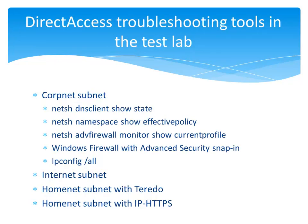The next part of this document has you view the results of these tools in the working test lab as Client1 connects to the various subnets. For example, we connect Client1 to the corpnet subnet and show the results of a series of netsh commands. Netsh DNS client show state shows the results of network location detection. Netsh namespace show effective policy shows the list of active Name Resolution Policy Table, or NRPT, rules.